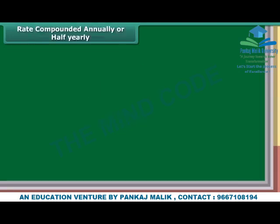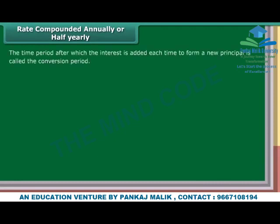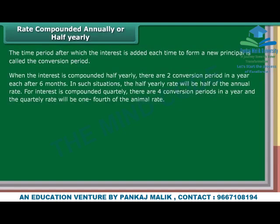Rate compounded annually or half yearly. The time period after which interest is added each time to form a new principal is called the conversion period. When interest is compounded half yearly, there are two conversion periods in a year, each after six months. In such situations, the half yearly rate will be half of the annual rate. For interest compounded quarterly, there are four conversion periods in a year and the quarterly rate will be one-fourth of the annual rate.